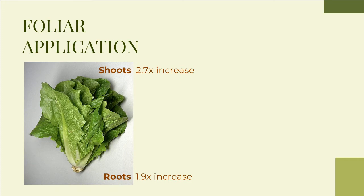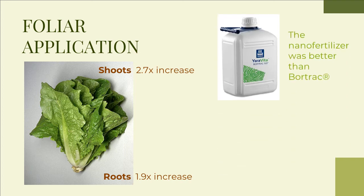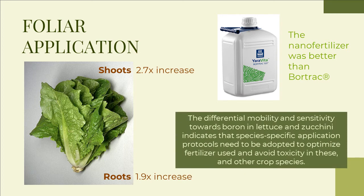Foliar application of the boron-containing nano fertilizer increased shoot and root dry mass production of lettuce by 2.7 and 1.9 fold when applied to boron-limited plants. This nano fertilizer benefit was also noted in comparison to a commercially available foliar spray, Bortrac, where the nano fertilizer application increased plant growth by around 58%. The differential mobility and sensitivity towards boron in lettuce and zucchini indicates that species-specific application protocols need to be adopted to optimize fertilizer use and avoid toxicity in these and other crop species.